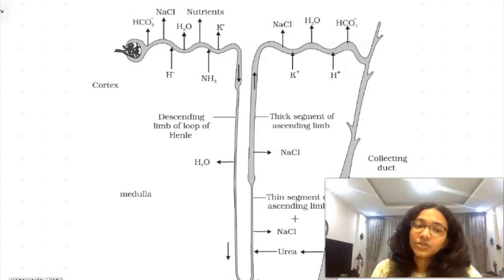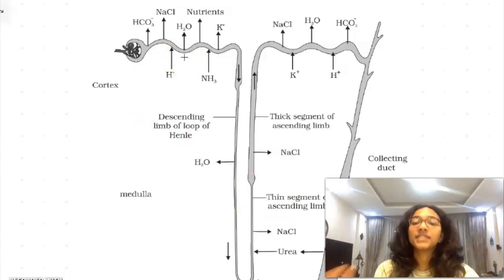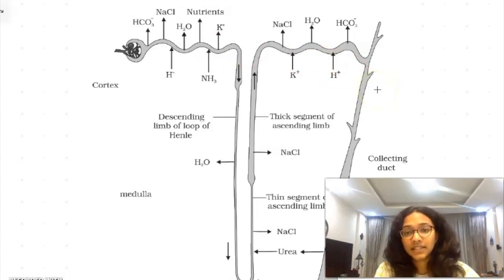You just have to learn what are the ions that are being selectively reabsorbed, selectively secreted, and finally how concentrated the urine becomes after passing through these stages. So this was the mechanism of formation of urine.